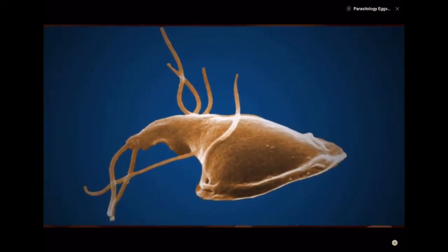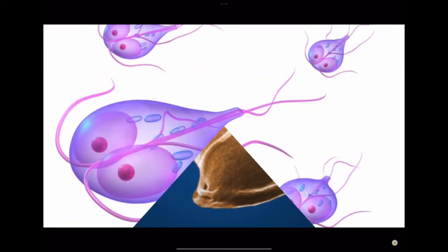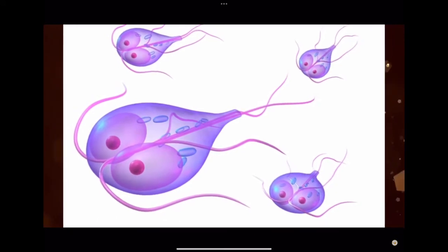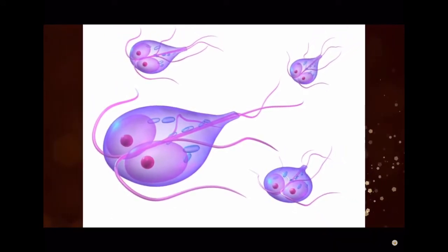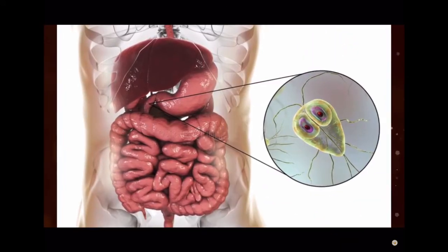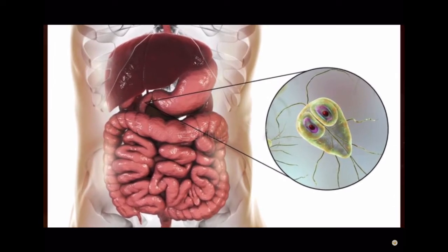Giardia, also known as Giardia lamblia, Giardia intestinalis, or Giardia duodenalis, is a flagellated parasite that colonizes and reproduces in the small intestine, causing Giardiasis.